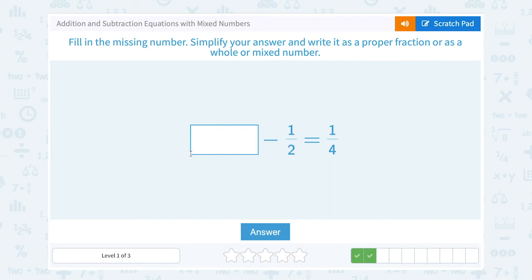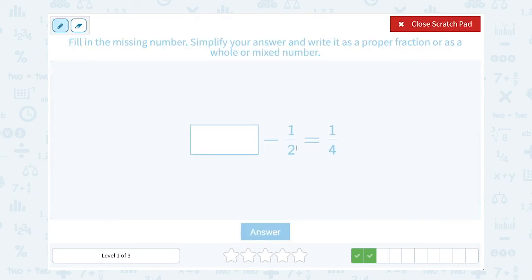Some number minus one half is equal to one fourth. To find the missing number, if I want to know what number it was before I subtracted one half, I can kind of think in reverse here. Well before I subtracted one half, it would have been one half bigger. So I can figure this out by saying, what is one half bigger than one fourth, or one half plus one fourth? That's working backwards to figure out what the number would have been before I subtracted.